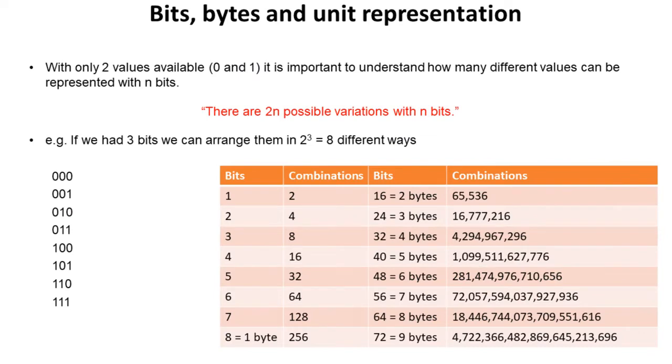With only two values available, 0 and 1, it's important to understand how many different values can be represented with n bits. There are 2^n possible variations with n bits. So for example, if we had 3 bits available, we can arrange them in 2 to the power of 3 or 8 different ways, and we can see that here.